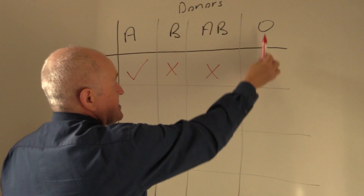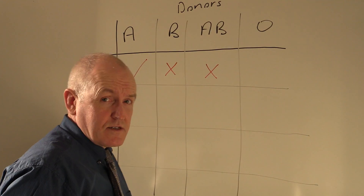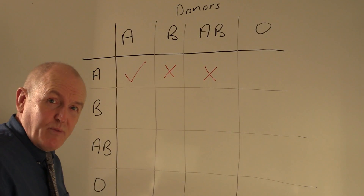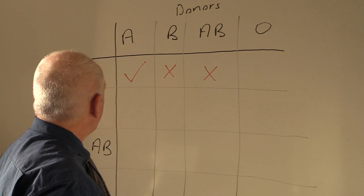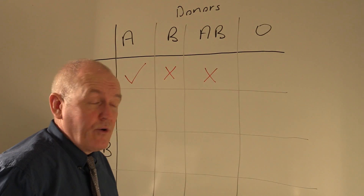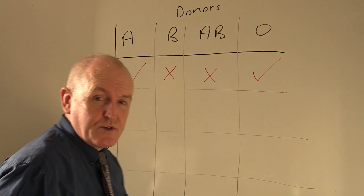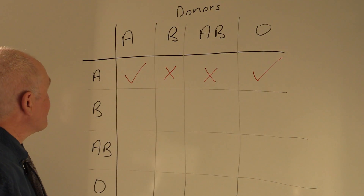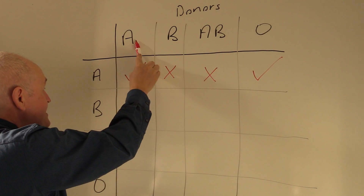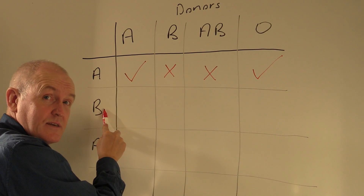Someone who is blood group O has no antigens on the surface of their red cells. Even although there are B antibodies in the group A plasma, that's not a problem because there are no antigens for them to interact with. So theoretically that is a permissible transfusion.